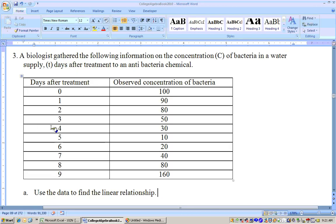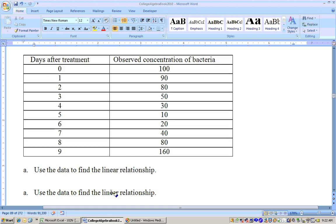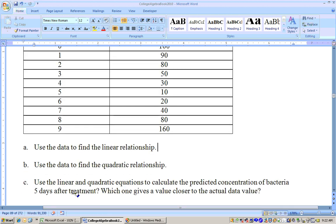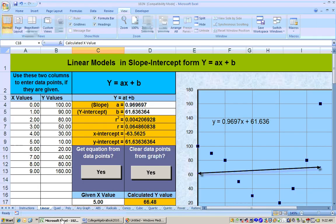Okay, this problem gives you the number of days after an antibacterial chemical in a water supply, and this is the concentration of the bacteria, and it says to get the linear relationship and quadratic relationship and see which one's closer after five days. So I copied and pasted special the data into the linear sheet right here. I click the button to get the equation from the data points, and I get my linear equation. The concentration predicted after five days was 66.48.